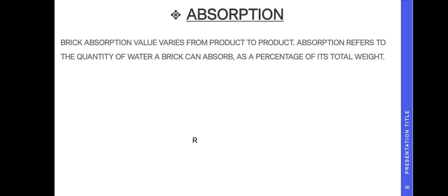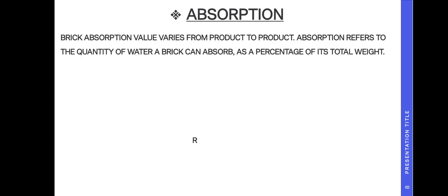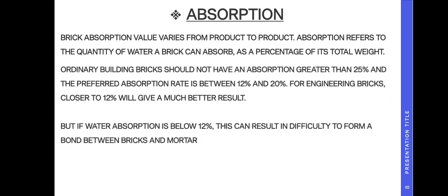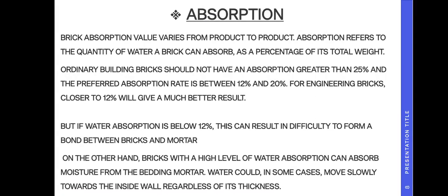Bricks' absorption values vary from product to product. Absorption refers to the quantity of water a brick can absorb as a percentage of its total weight. Ordinary building bricks should not have absorption greater than 25 percent, and the preferred absorption rate is between 12 percent and 20 percent. For engineering bricks, closer to 12 percent will give a much better result. If water absorption is below 12 percent, it can result in difficulty forming a bond between bricks and mortar. Bricks with a high level of water absorption can absorb moisture from the bedding mortar, which could in some cases move slowly towards the inside wall.